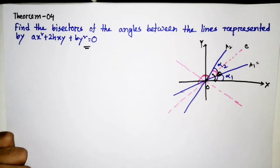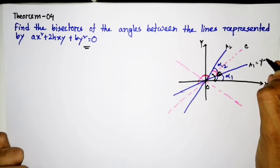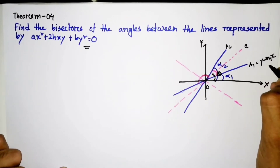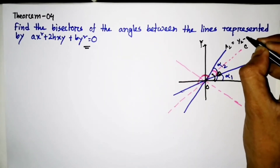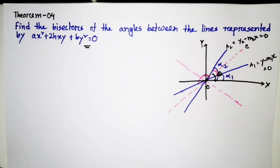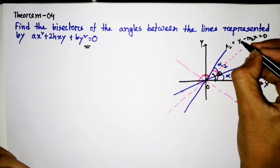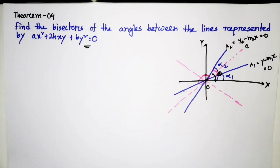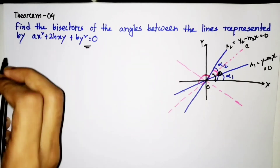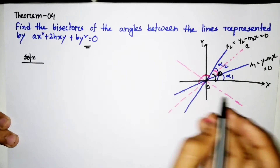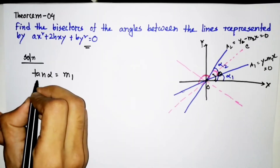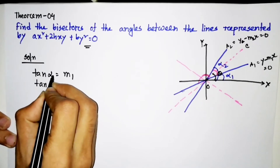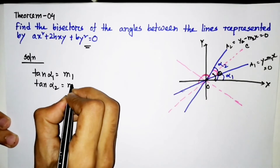Let the two lines be y − m₁x = 0 and y − m₂x = 0, so that tan(α₁) = m₁ and tan(α₂) = m₂. The angle bisector makes angle θ such that θ = (α₁ + α₂)/2.